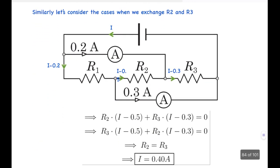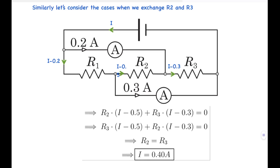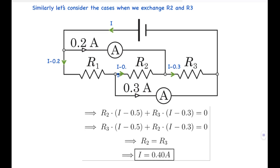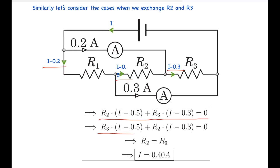Similarly, let's consider the case when we exchange R2 and R3. The branch currents are again I−0.2, I−0.5, and I−0.3. Writing the equation across the second ammeter: R2×(I−0.5) + R3×(I−0.3) = 0, and after exchanging R2 and R3 we get the swapped equation. Again R2 must equal R3, and from here the current through the battery works out to 0.4 ampere. So these two cases are certainly possible.